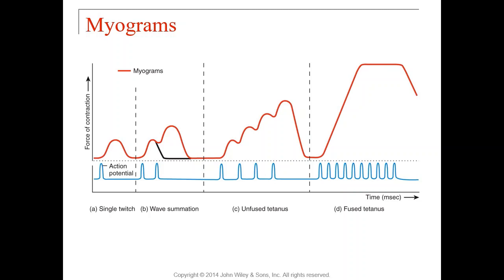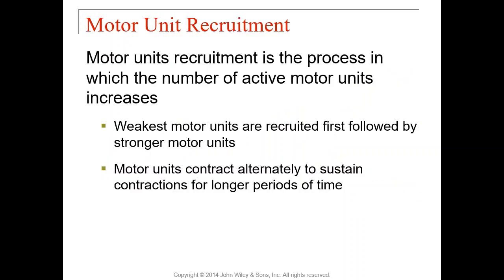To generate a tetanus, it again comes down to the neuron. On a myogram — a chart showing the force of contraction, where higher means stronger force — you can see a flat plateau representing someone holding a contraction. The blue line below shows action potentials from your neurons. A single action potential causes a brief twitch and then the muscle relaxes. But if you fire another action potential immediately after the first one...